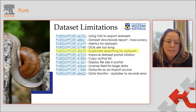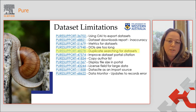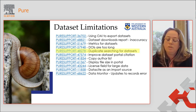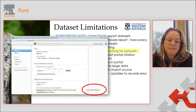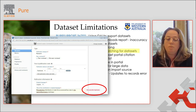Now that we're importing dataset records published externally, we really need to be able to check for duplicates that exist in Pure. We can't check for duplicates with datasets as we can with other research outputs, so that would be a really useful improvement.